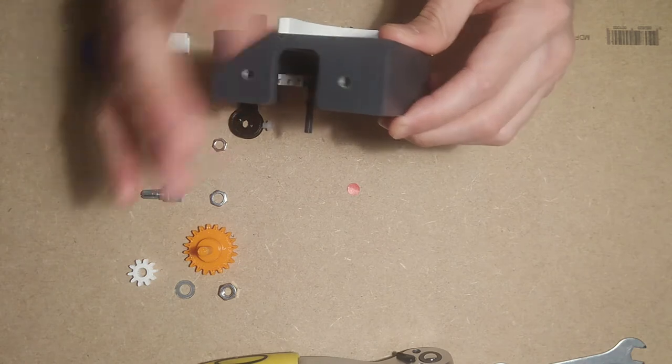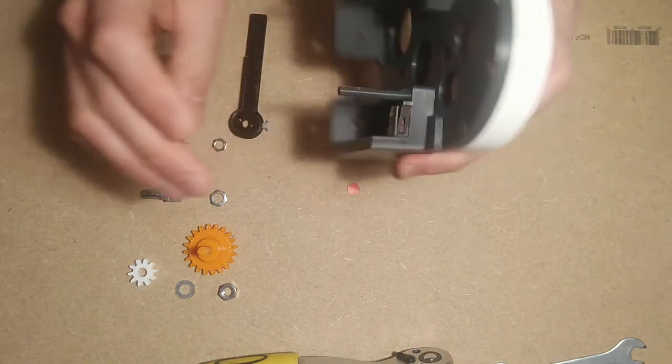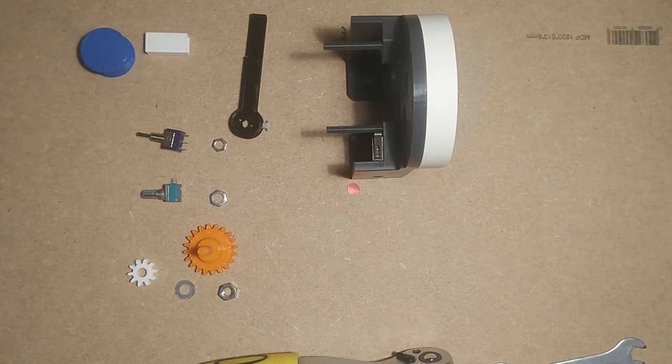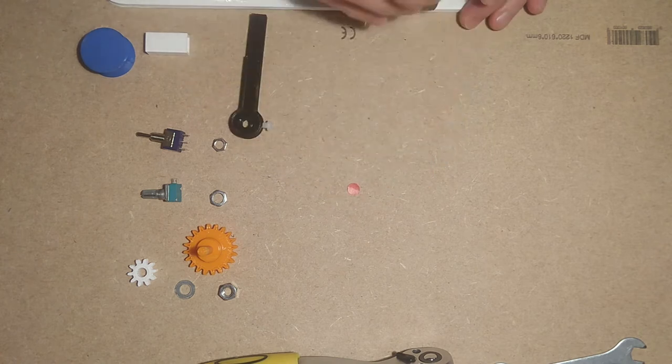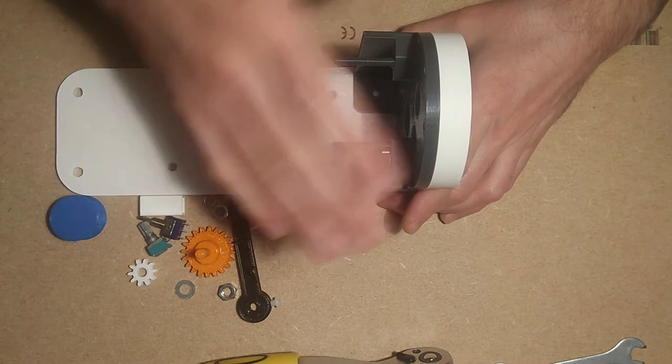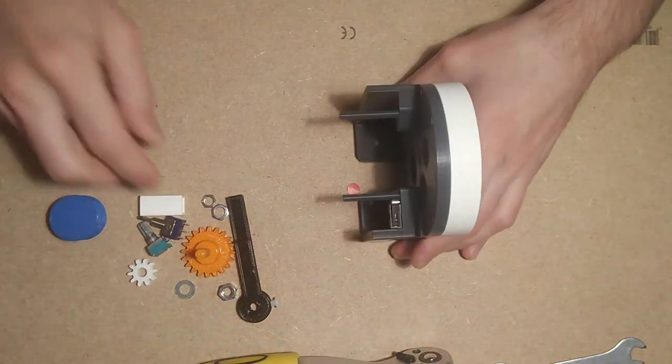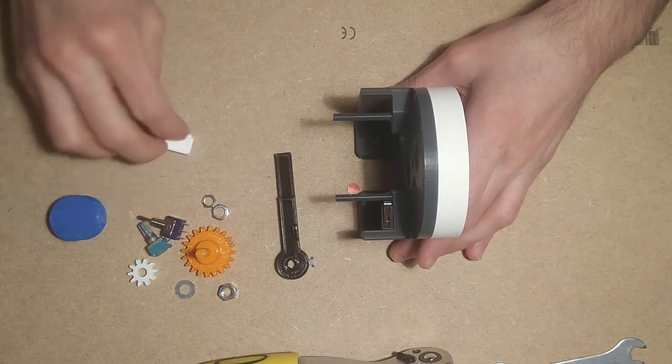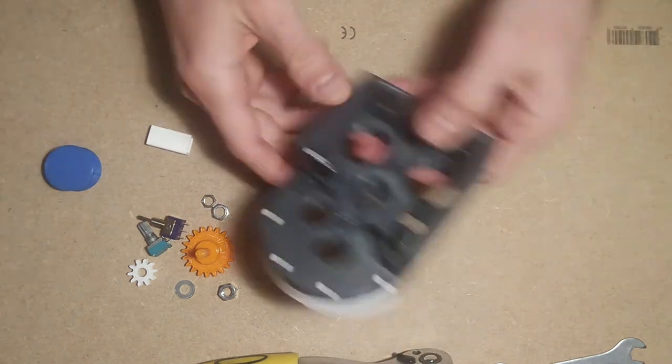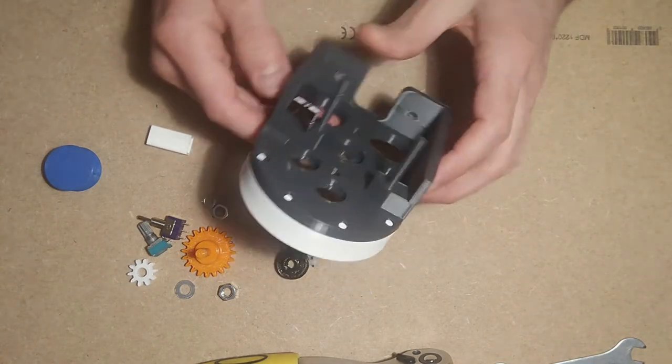Also, I would recommend that you, before you mount anything, you thread these two holes. Because they will be later on assembled in a base plate with two screws from underneath, they will be placed on this base plate. But that's going to be coming later. So let's go back and start.